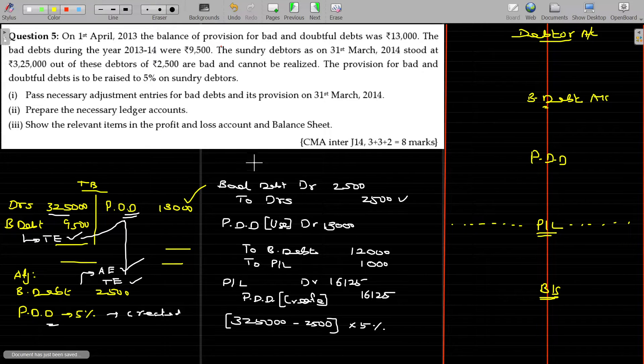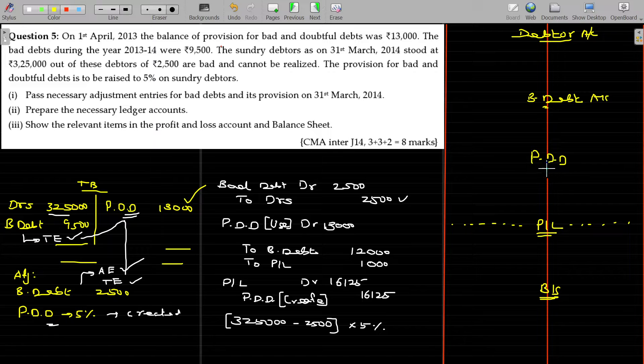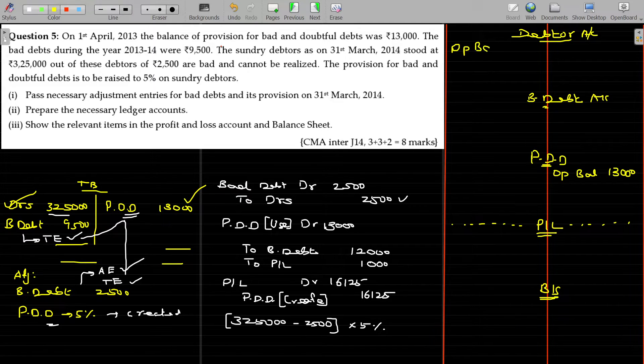PDD given in the trial balance, 13,000. In the credit side, it will go to the credit side of the PDD account, opening balance. This balance being 13,000. Debtors being the debit balance, I will start with opening balance in the debit side, 3,25,000.